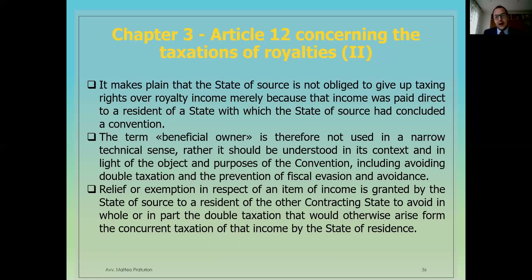It should be understood in its context and in light of the object and purposes of the Convention, including avoiding double taxation and the prevention of fiscal evasion and avoidance. Relief or exemption in respect of an item of income is granted by the state of source to a resident of the other contracting state to avoid, in all or in part, the double taxation that would otherwise arise from the concurrent taxation of that income by the state of residence.